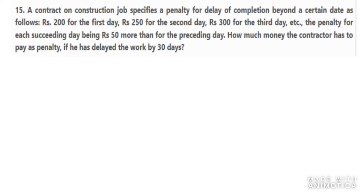That means there is a difference of 50 in each specific day, so the AP is as follows: 200, 250, 300, and so on. We need to find how much money the contractor has to pay as a penalty if he has delayed the work by 30 days. That means we need to find SN, in this case for 30 days.